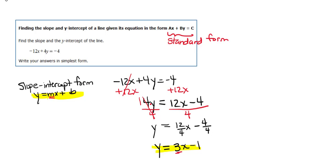And the constant term is b. So b is equal to negative 1. Now we know the m is always our slope. So our slope is 3. And our y-intercept is b.